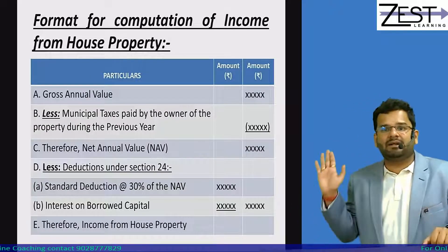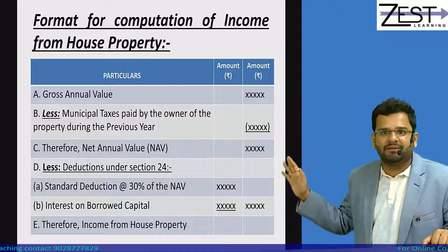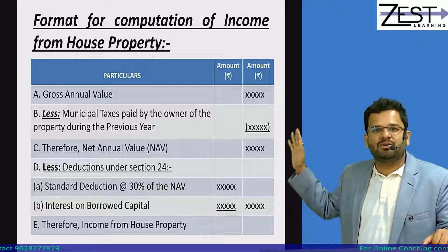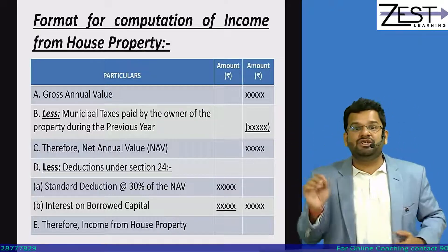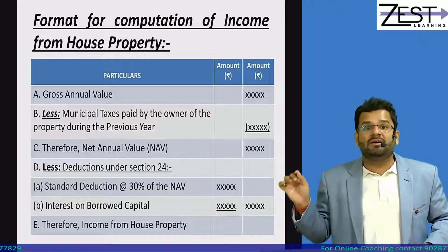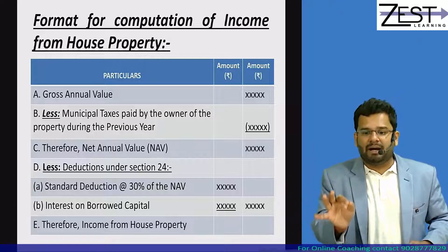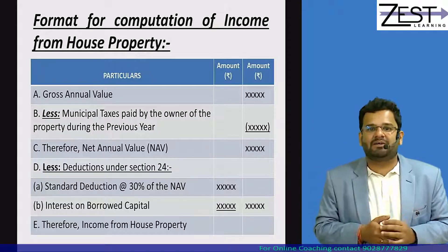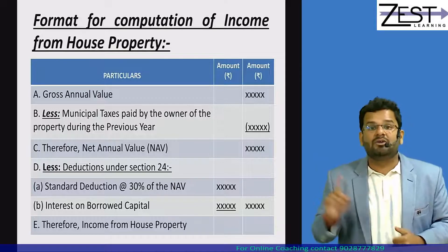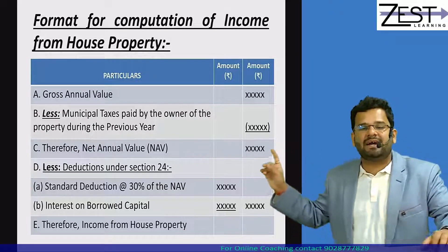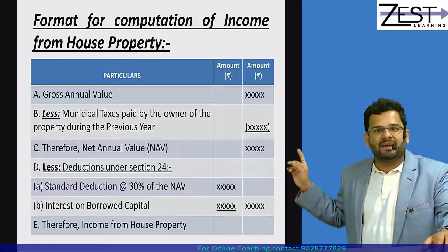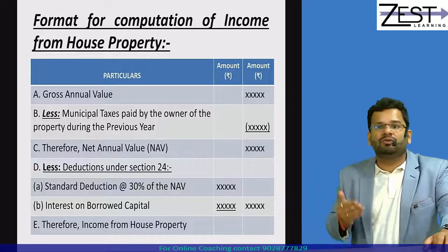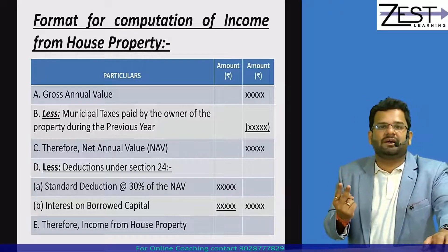There is a great format for calculating income from house property. First, you calculate something called Gross Annual Value (GAV). Then you get something called Net Annual Value (NAV). NAV is taxable, but the government is kind enough to give you two deductions.